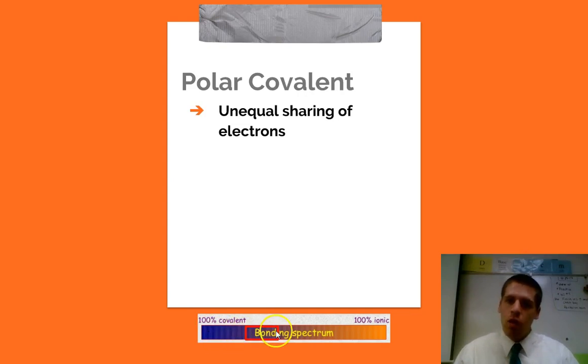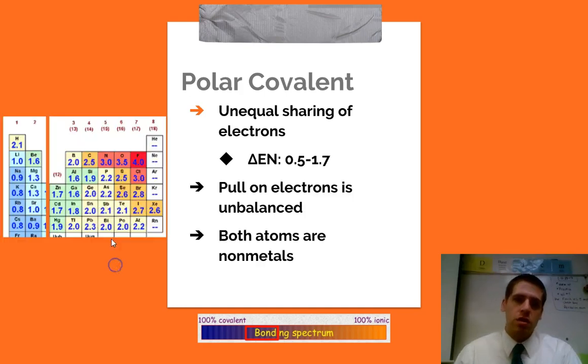Now let's look at polar covalent. So we're sliding over on the bonding spectrum. Now we're still dealing with sharing of electrons, but unequal sharing. And we're going to make our cutoff points somewhere between 0.5 and 1.7. So if we look at water, for example, water is made of oxygen and hydrogen, 3.5 versus 2.1. That difference there is 1.4. And so it's an unequal sharing of electrons. It's a polar covalent bond.